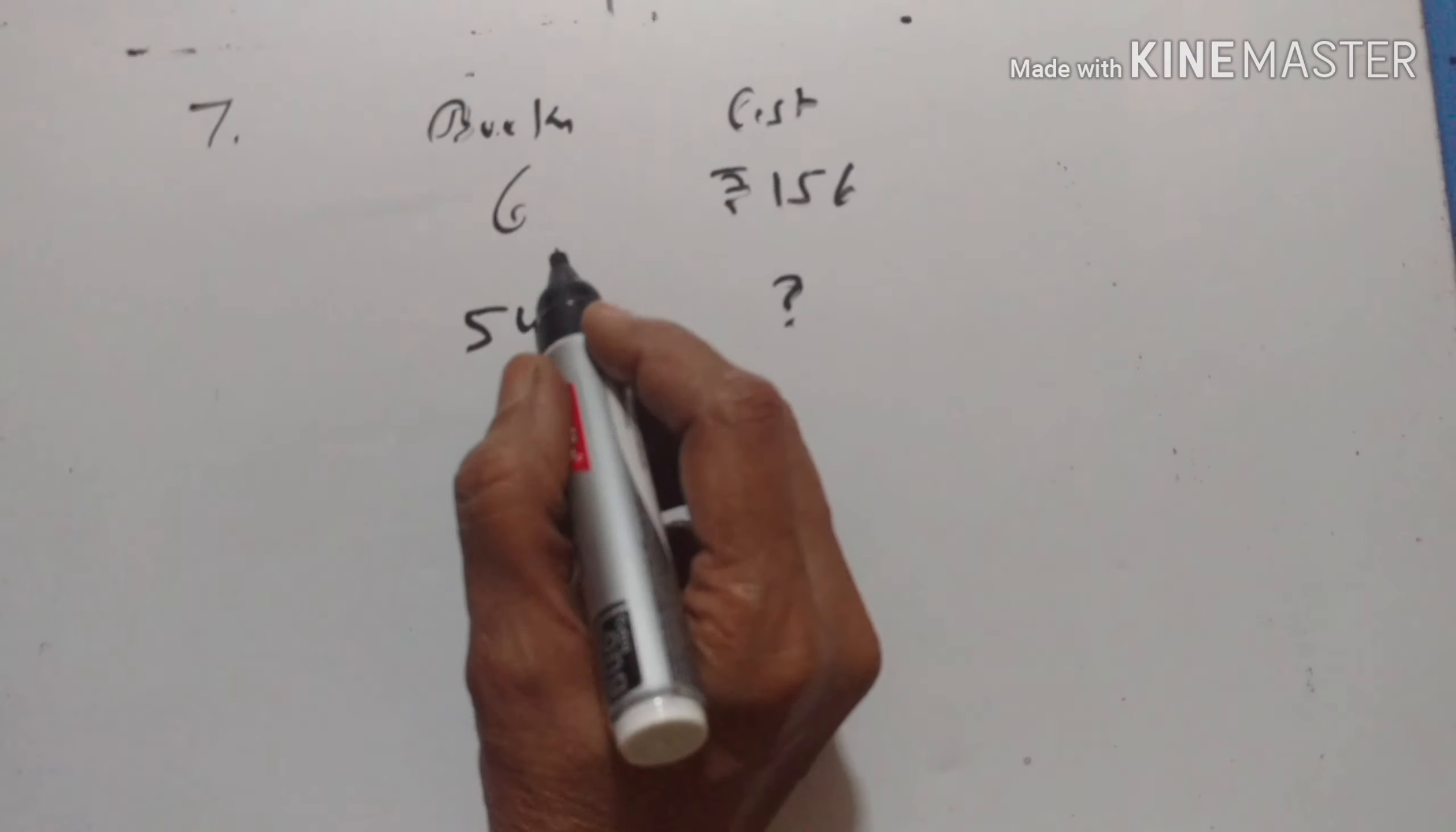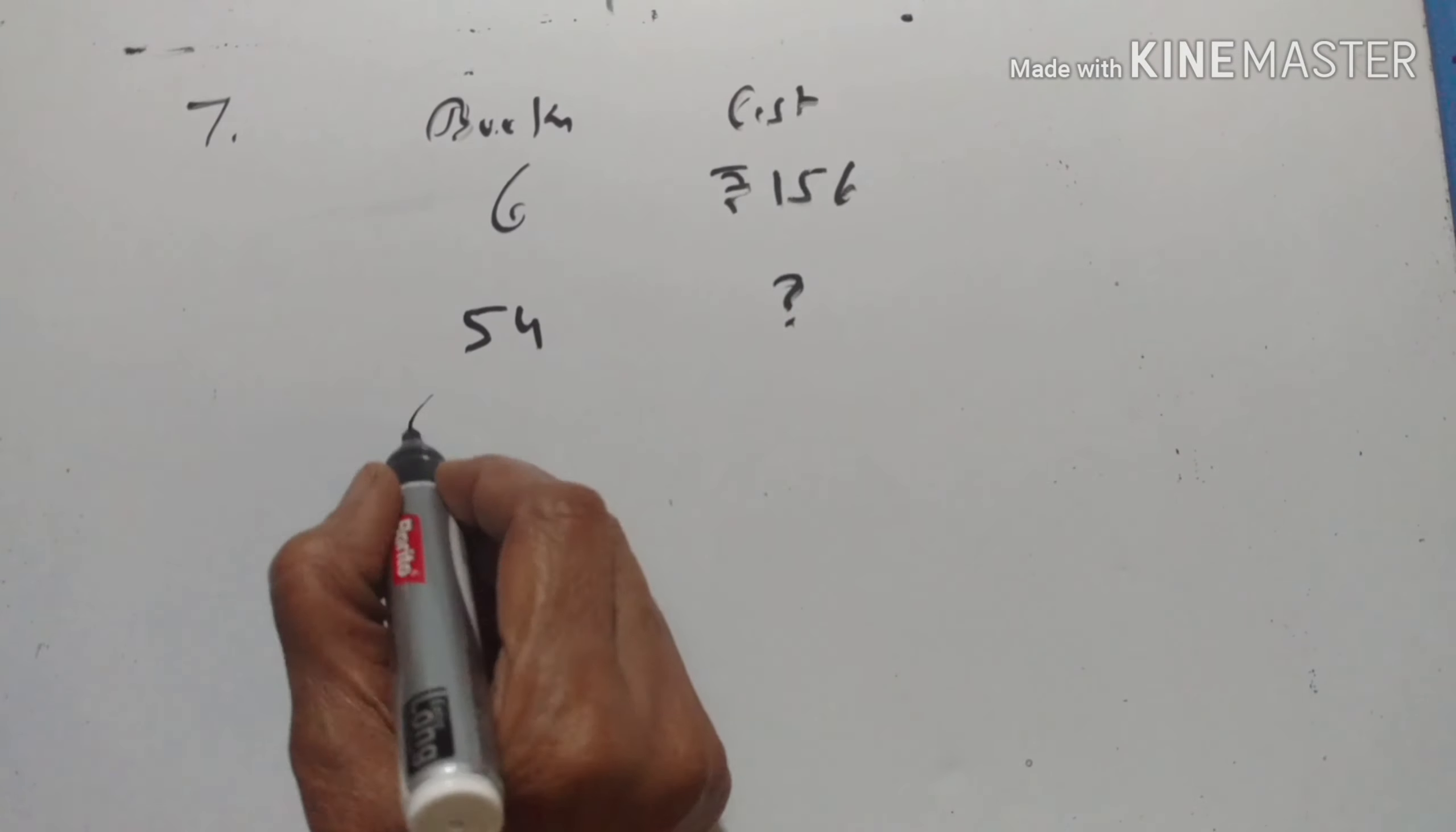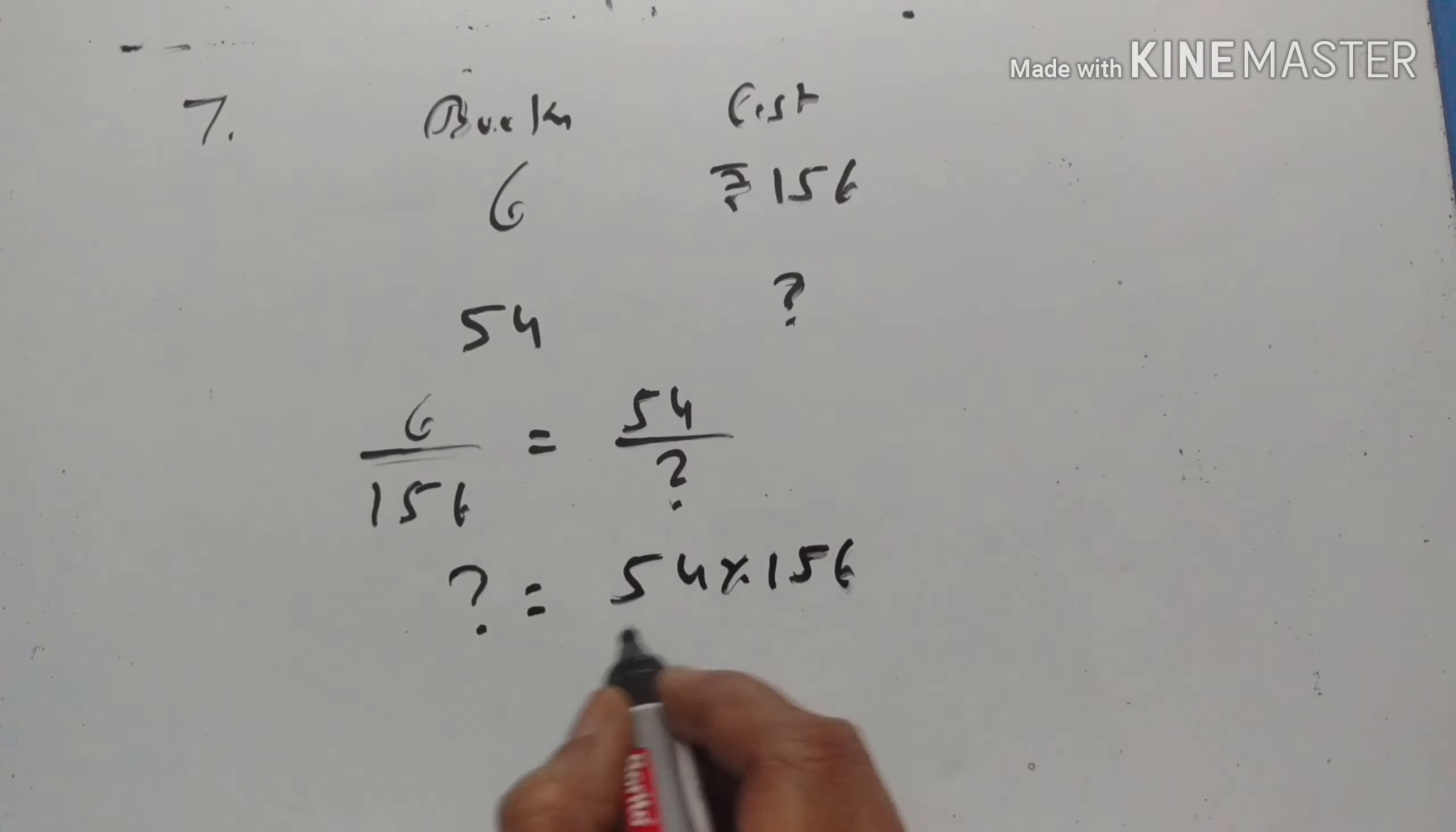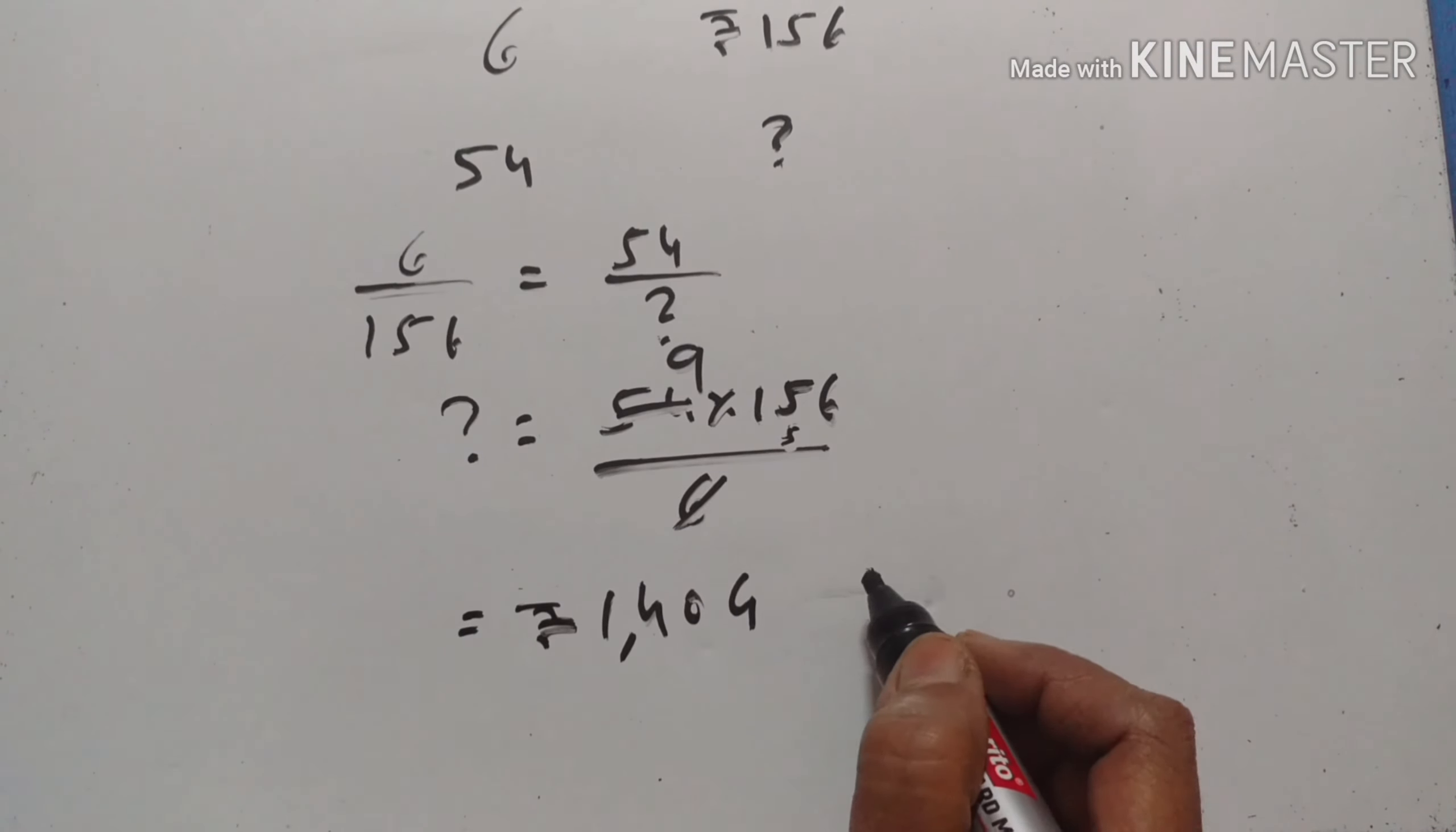7th problem. 6 notebooks cost Rs. 156. Find the cost of 54 such notebooks. X1 upon Y1 is equal to X2 upon Y2. So question mark is equal to 54 into 156 divided by 6. 6 1, 6 9 is the 54, 9 into 156. Rupees 1404 is the cost of 54 notebooks.